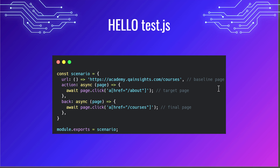Now let us see a quick hello world example. Here I have created a simple test.js which we are going to run on our local machine. I am defining a variable called scenario. In this scenario, I have three things: the URL, which is academy.qainsights.com — this is the baseline page. The action step clicks the hyperlink for the slash about page, navigating to the about page. The final step goes back to the previous page by navigating to slash courses. If you run this script, this is what it will do by launching the browser — Chrome by default.